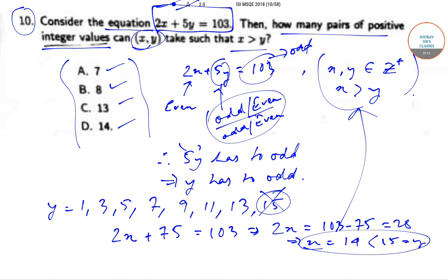So then y has to take the values 1, 3, 5, 7, 9, 11, and 13. In total, there are 7 values, and that will give us 7 pairs of x, y. The number of positive integral values that x, y can take is 7, which is option A.